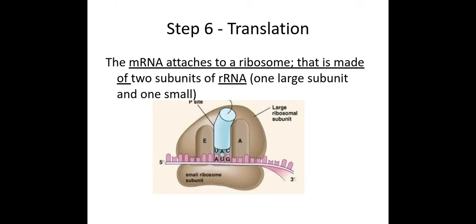So the mRNA will attach to a ribosome. The ribosome could be attached to the rough ER, or it could be free within the cytoplasm of that cell. Now the ribosome is made up of two subunits, made of rRNA, which is another type of RNA we need to be aware of.